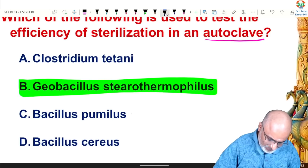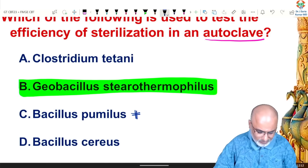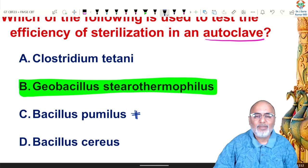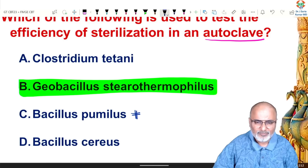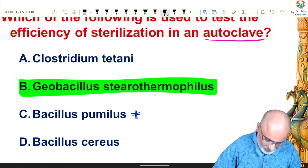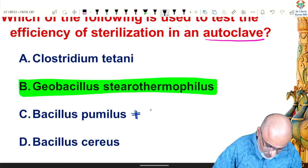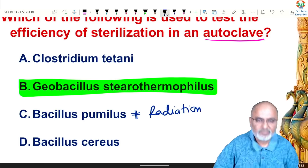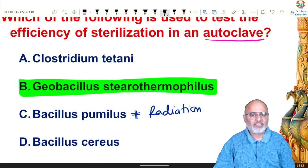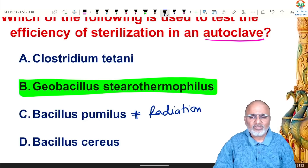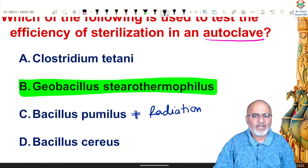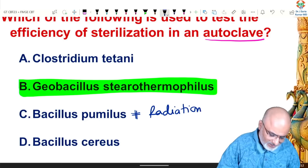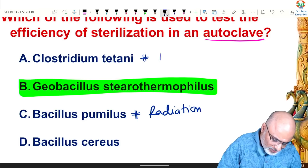Bacillus pumilus is mainly used for radiation sterilization quality control.